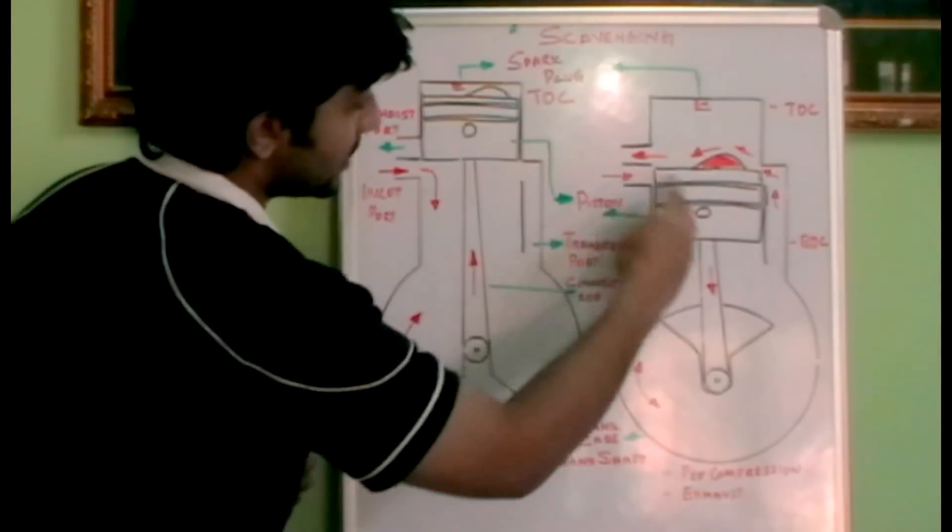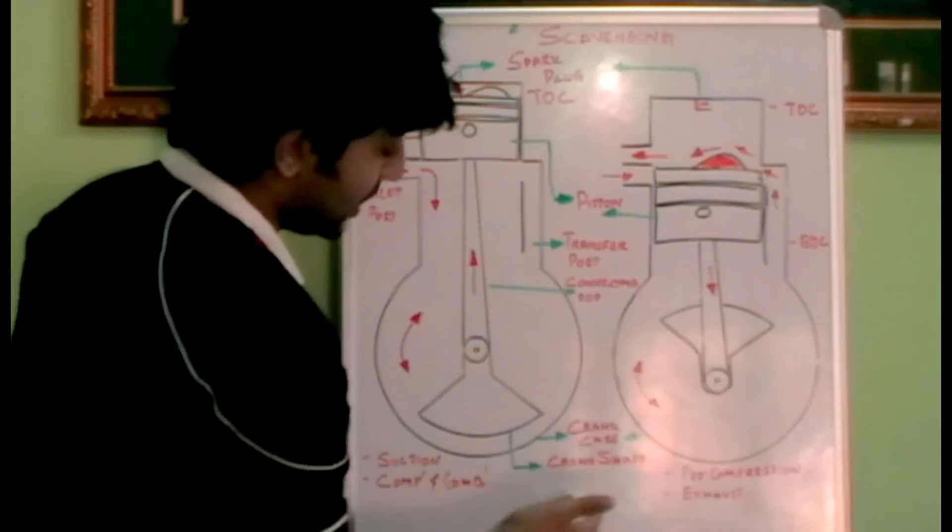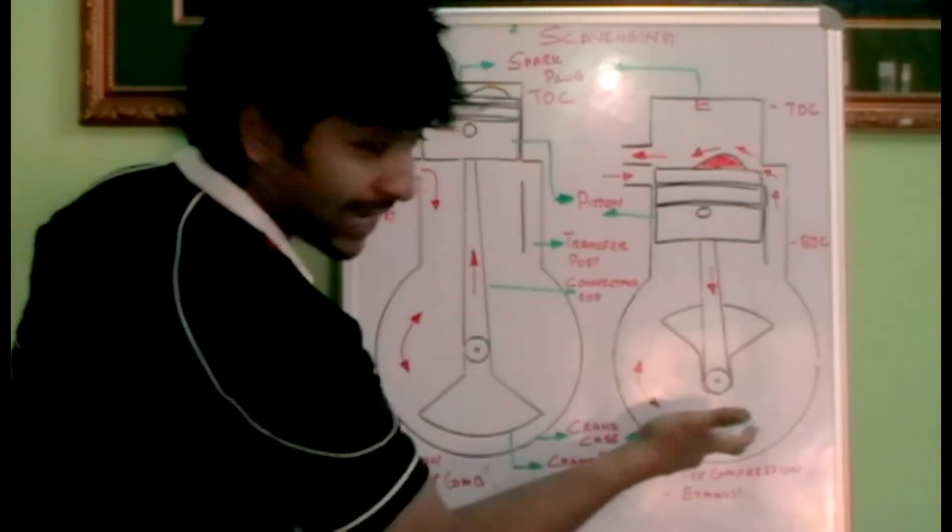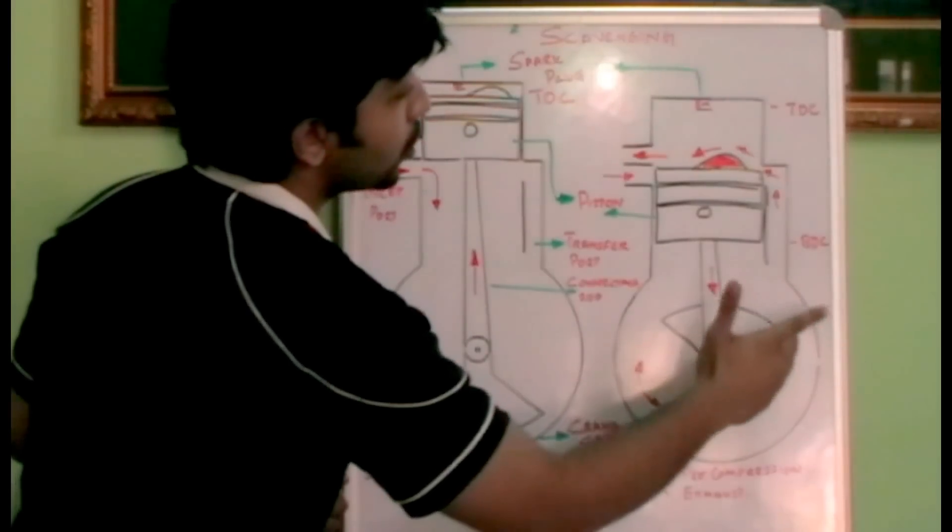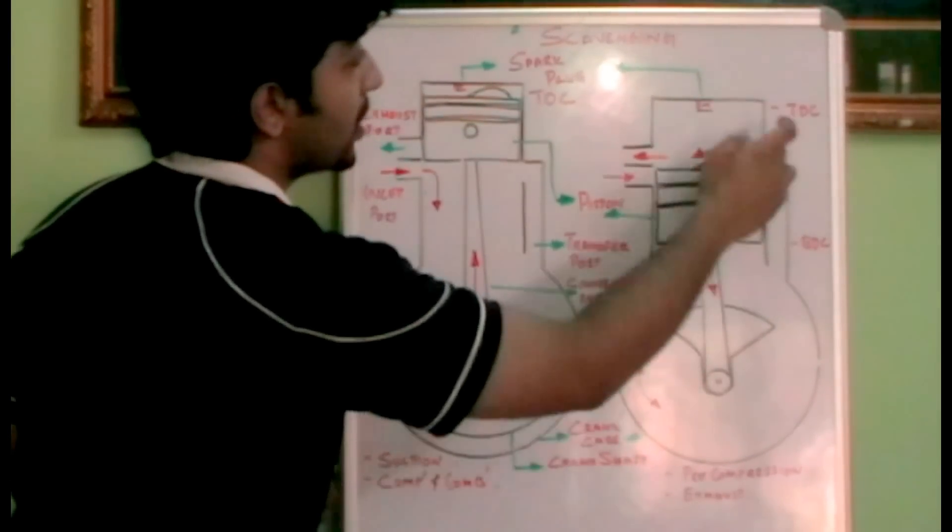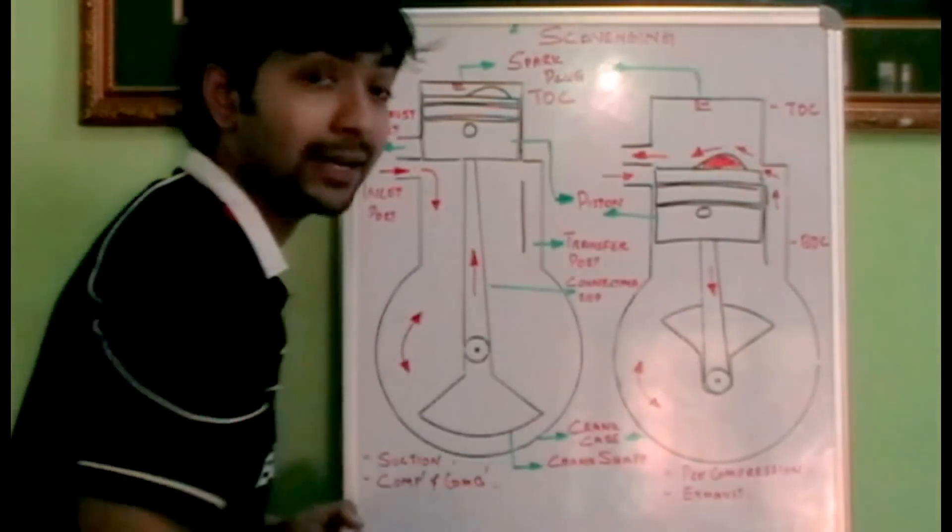The fresh charge that has already been sucked inside the crankcase gets pre-compressed and moves through this transfer port towards the top dead center of the cylinder.